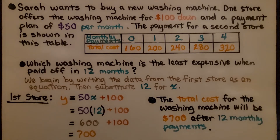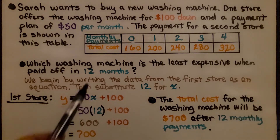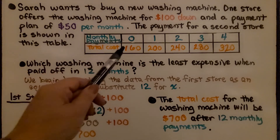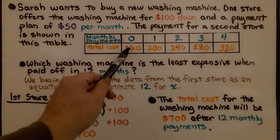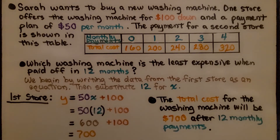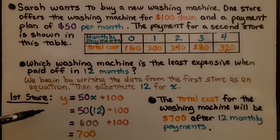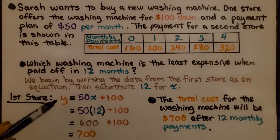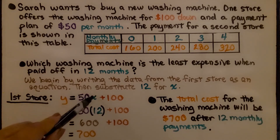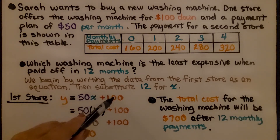Let's try another one. Sarah wants to buy a new washing machine. One store offers it for $100 down and a payment plan of $50 per month. The payment for a second store is shown in a table. We have monthly payments as x and total cost as y. For store one, we have the equation y = 50x + 100, representing $50 per month plus the $100 down payment.